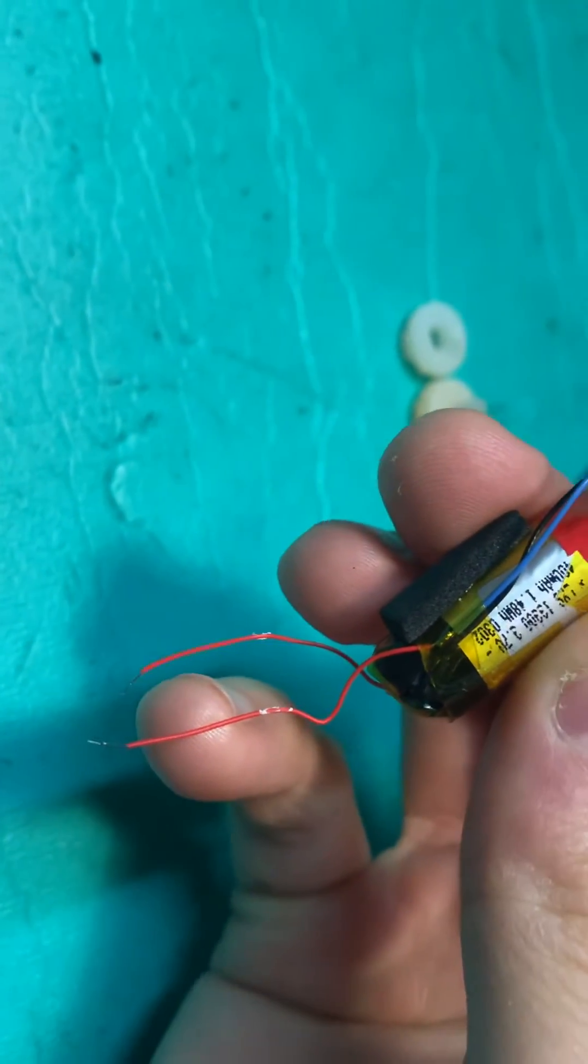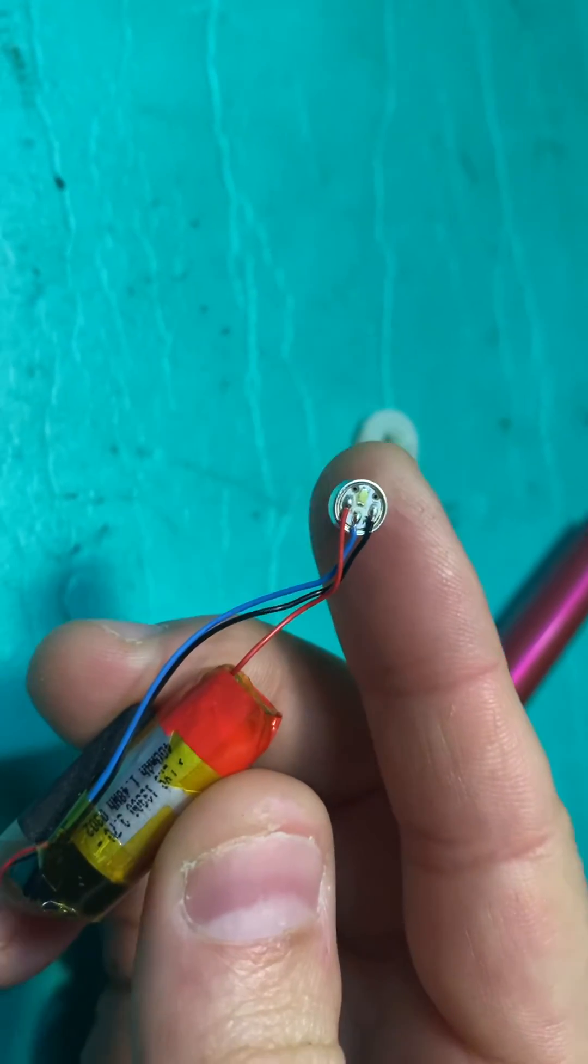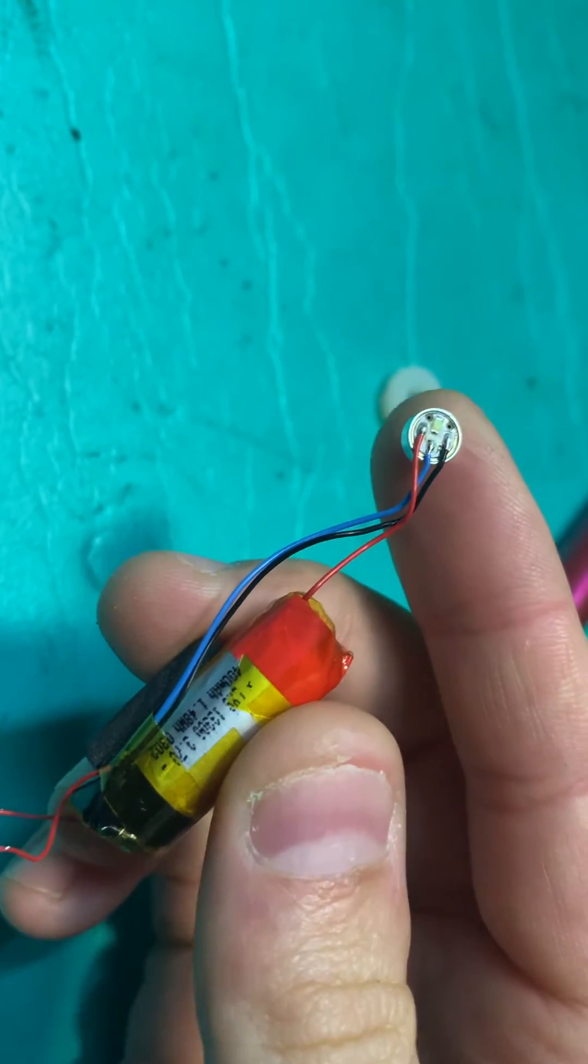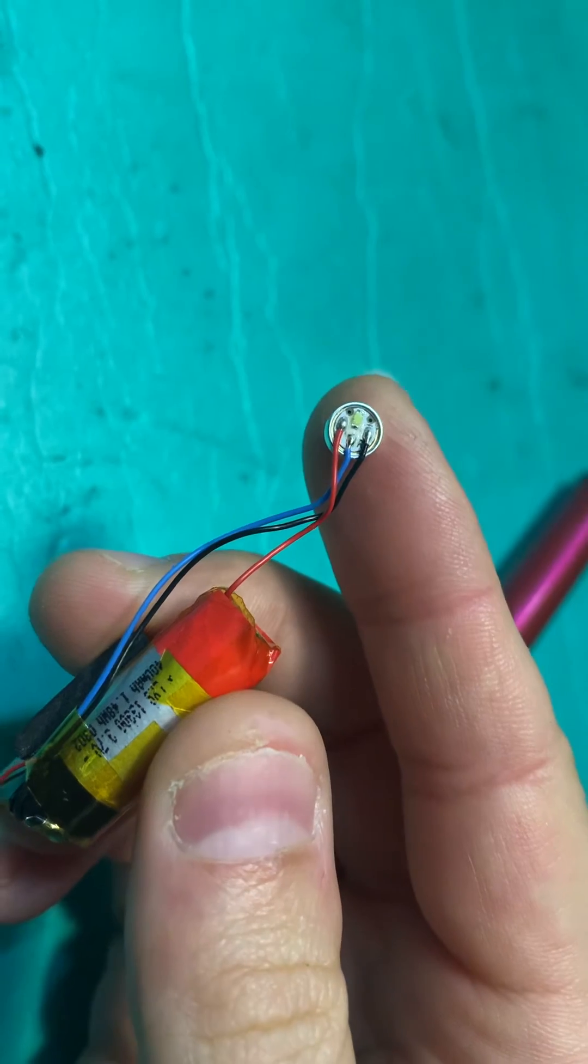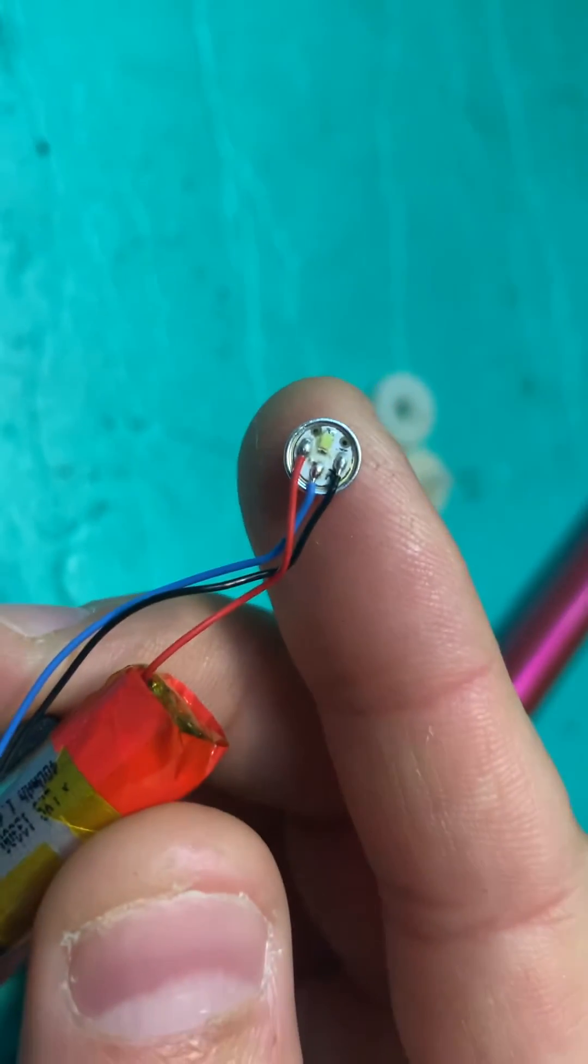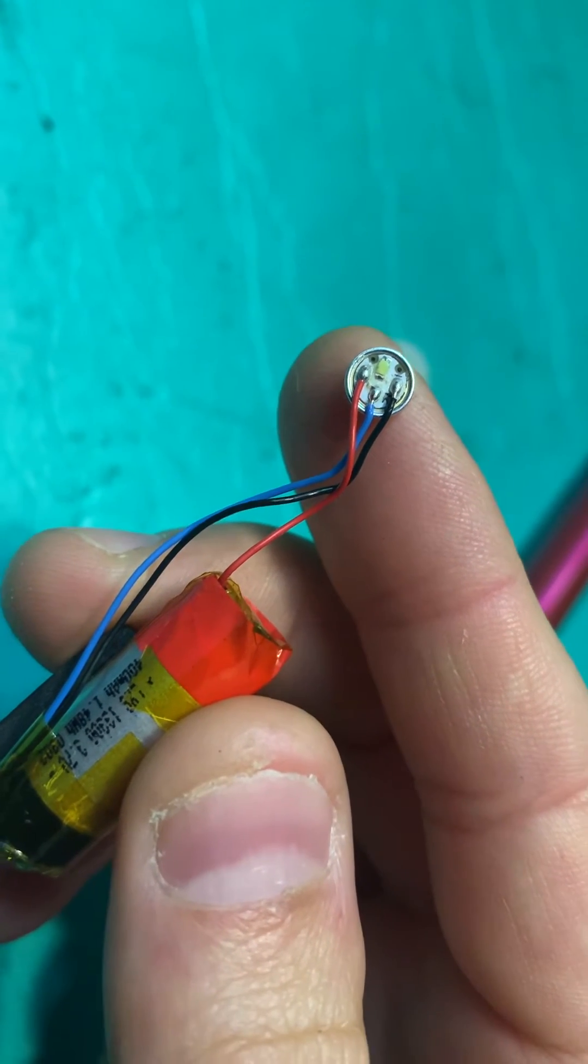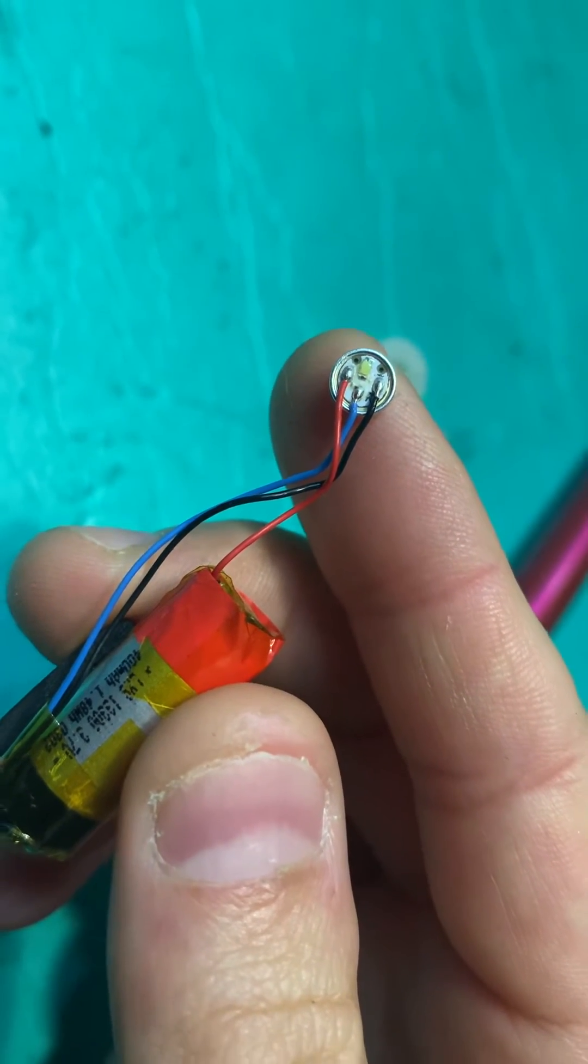This starts the heating process. So this little sensor here has always got power, and just the airflow over the sensor will cause that very small LED to go white, and it will send power for a short amount of time so you can start vaping.